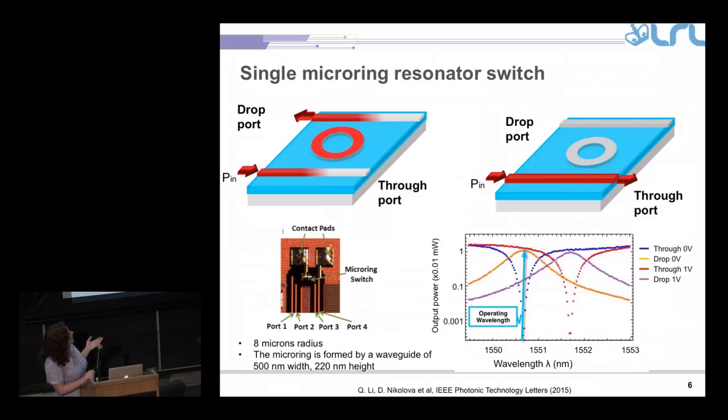Because the ring can be on resonance with many wavelengths, we can switch many wavelengths simultaneously. We have such a device. It was manufactured by somebody else, but we have this device in the lab. It has a micro ring of eight microns, four ports, and I have done some measurements on it.